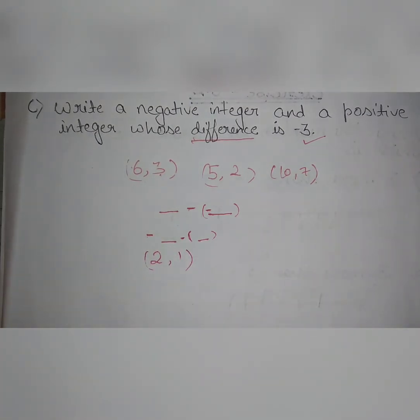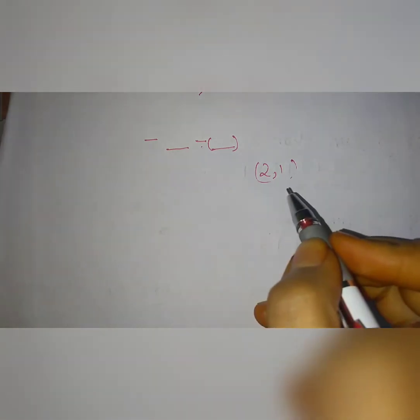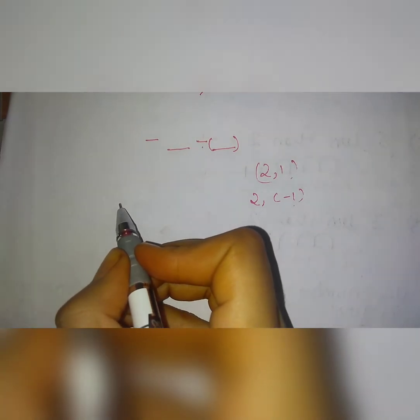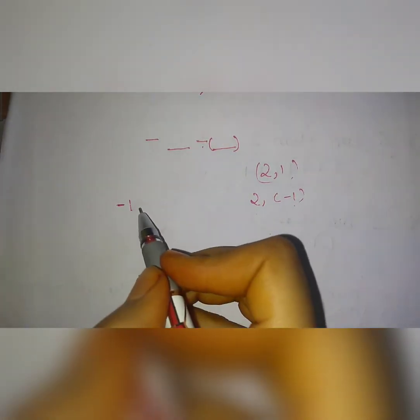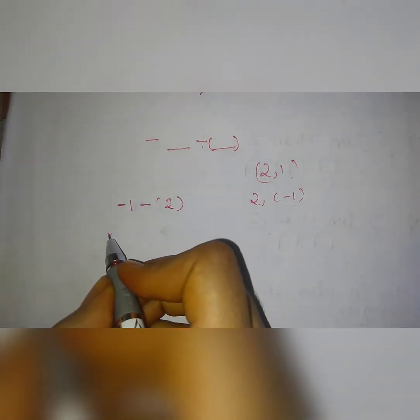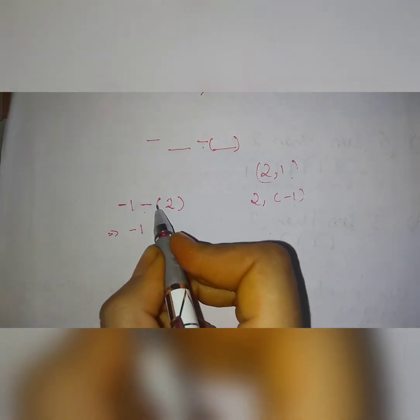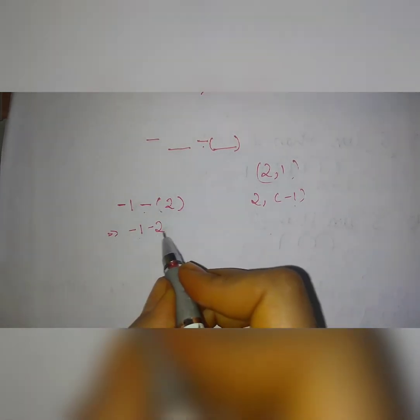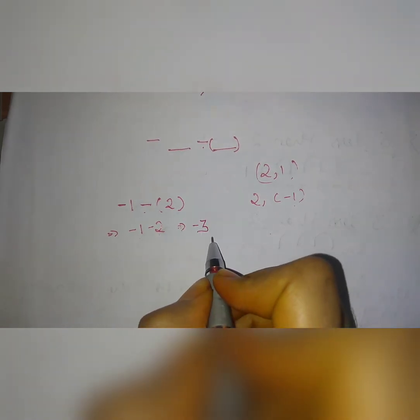When we add 2 and 1 we get 3. Now we take one integer as negative and the other as positive. If we take negative 1 and positive 2: minus 1 minus minus 2 — here minus and minus becomes plus, giving minus 1 plus 2, but arranged as minus 1 minus minus 2 equals minus 3. So our answer is minus 3. This is how you solve question number second.